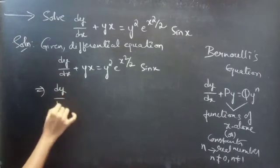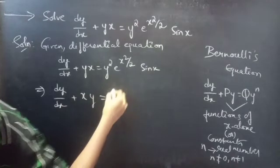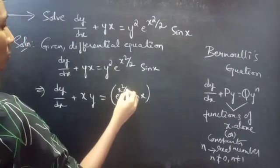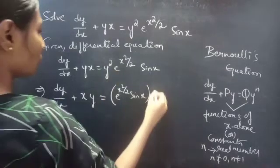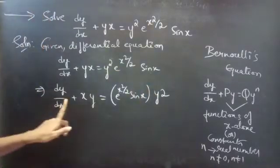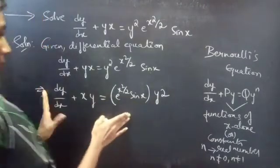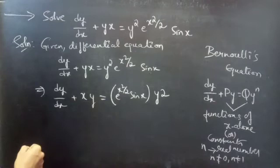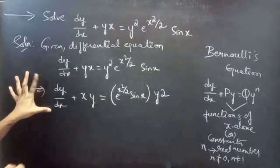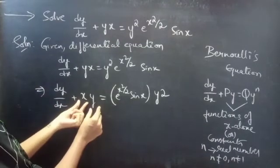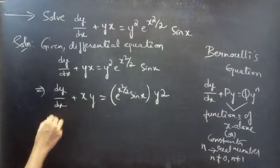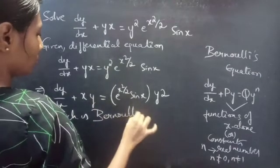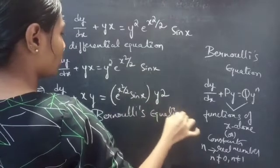Now, you can write the whole equation as dy/dx plus x·y equals e^(x²/2) times sin x times y². By comparing this equation with Bernoulli's equation dy/dx plus P·y equals Q·y^n, we can say that the given equation is a Bernoulli's equation, or we can say that this is in Bernoulli's form.